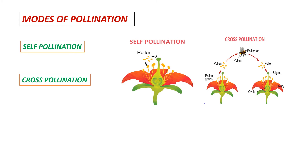Cross pollination involves two flowers and two plants. A third situation arises where pollen from the anther of one flower falls on the stigma of another flower, both flowers belonging to the same plant. This situation is called gaitanogamy. The genetic consequences of gaitanogamy are similar to autogamy or self pollination, so in some cases gaitanogamy is considered as self pollination.